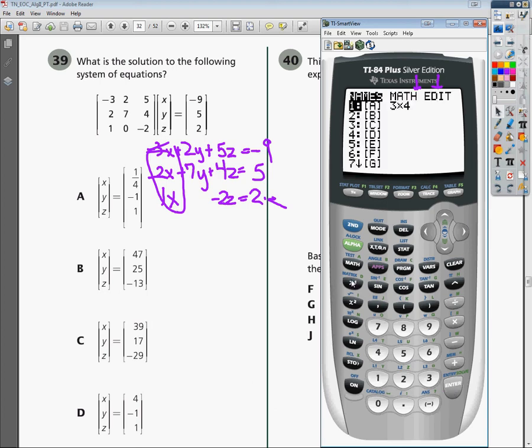Now I just need to tell it which matrix I want it to use. So I'm going to hit second, matrix, and I'm going to choose that 3 by 4 that I just made, and I can close the parentheses if I want. Hit enter, and it tells me this information.